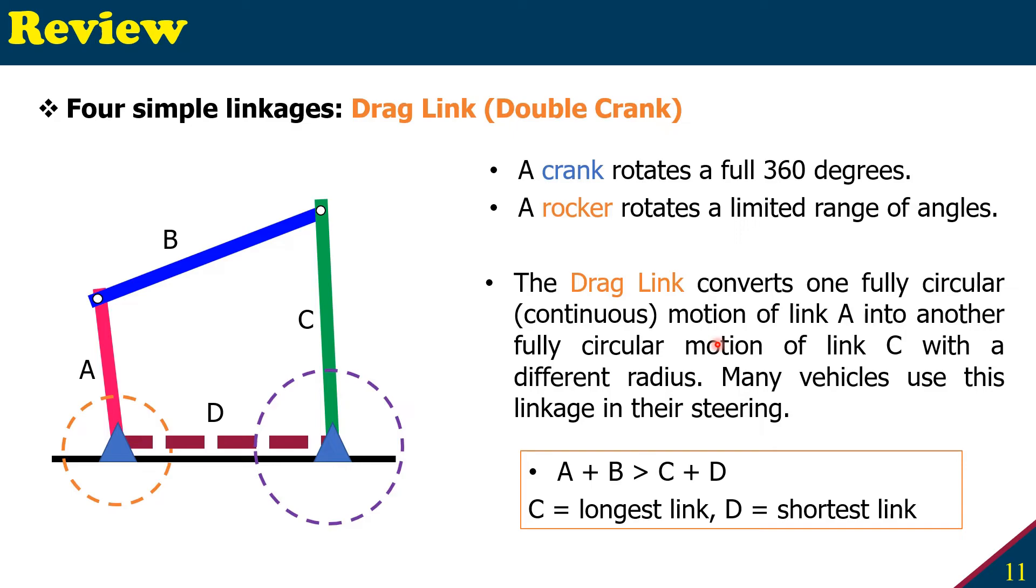So a drag link converts one fully circular, that means continuous motion of link A into another fully circular motion of link C with a different radius. Many vehicles use this linkage in their steering.